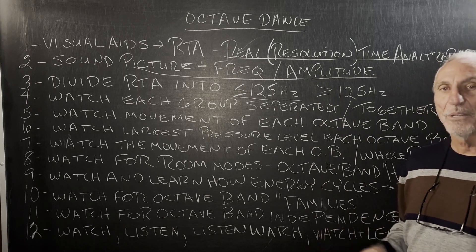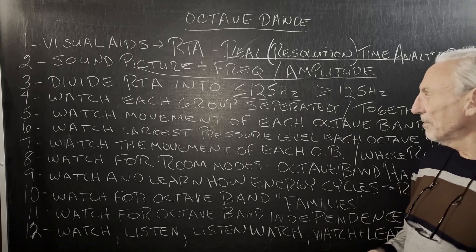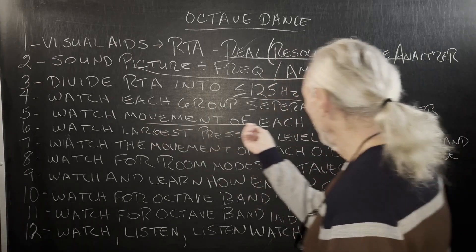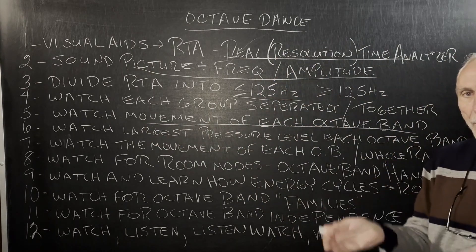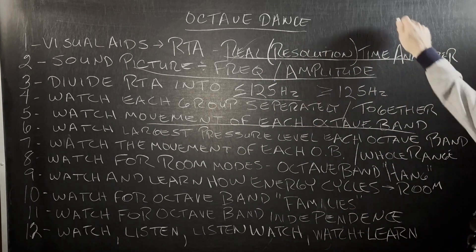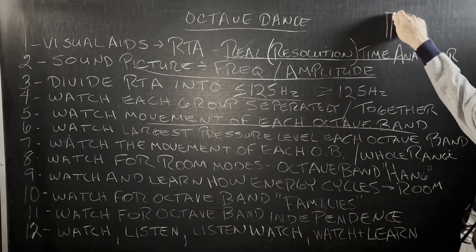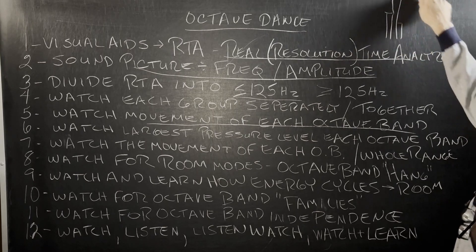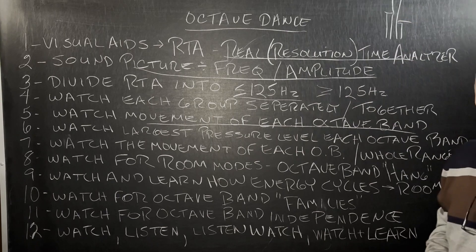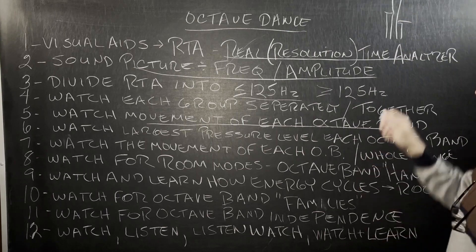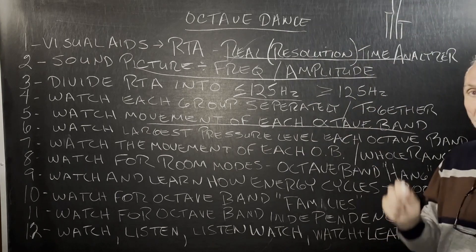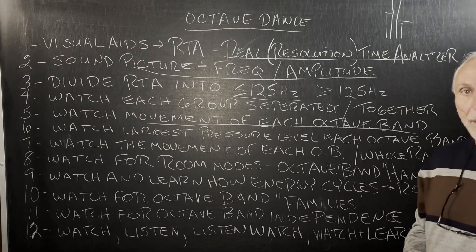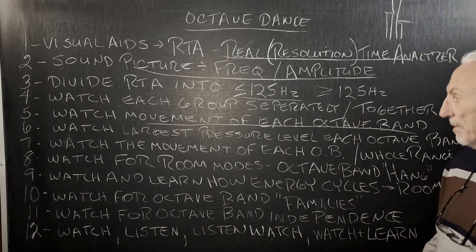Each one of those octave bands is eight notes by definition. Watch the movement of each octave band compared to the others. Watch the peaks — if you get one that's way up here and one that's way down here, we want to try to shrink that difference and bring it closer. That's what we do with treatment. If you understand the gap, you'll understand the reason for the treatment.